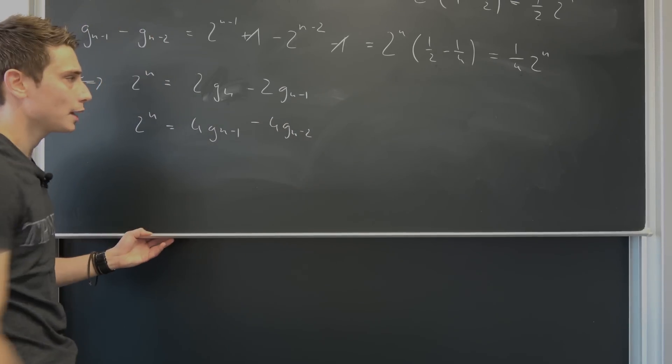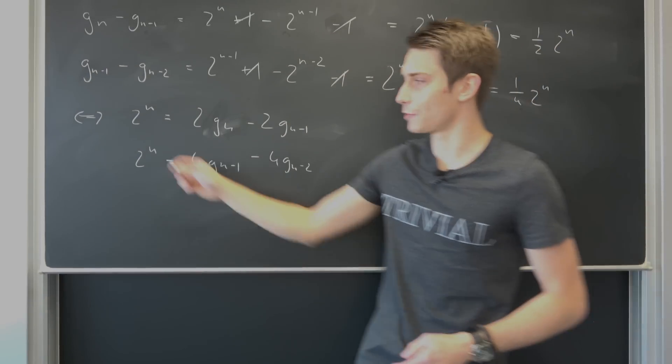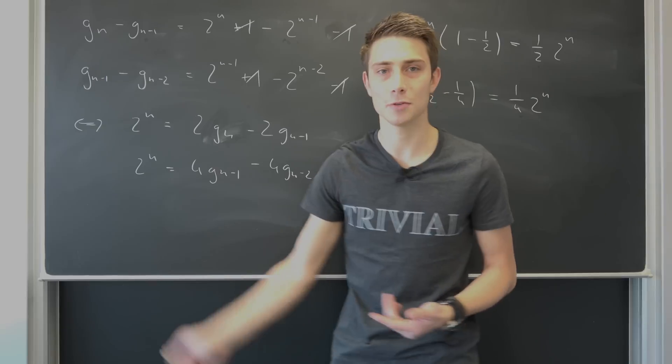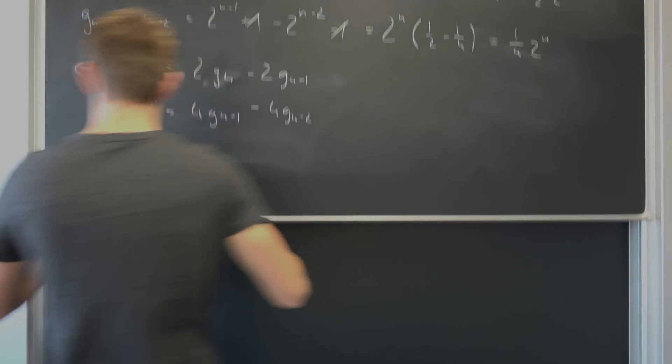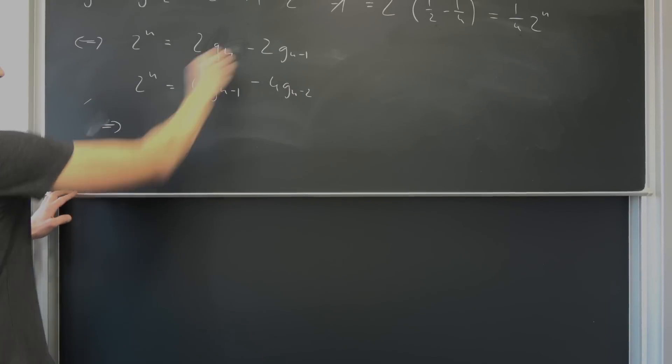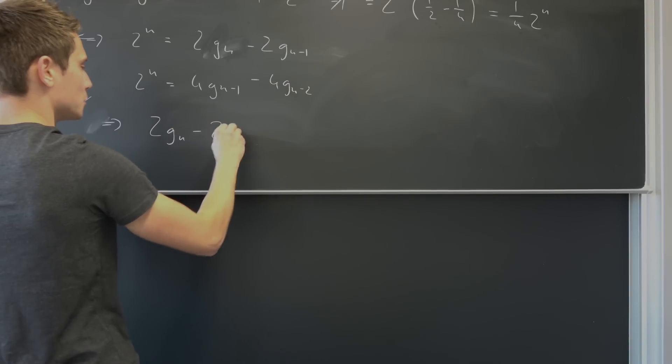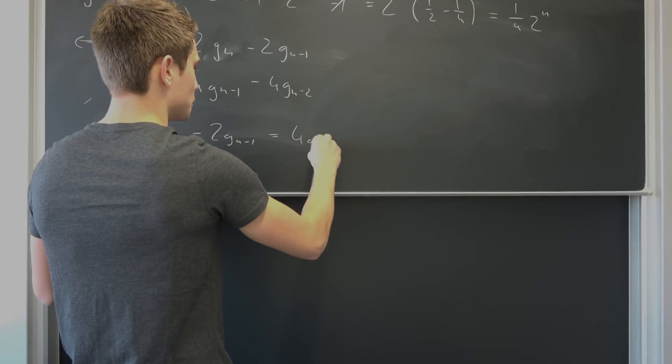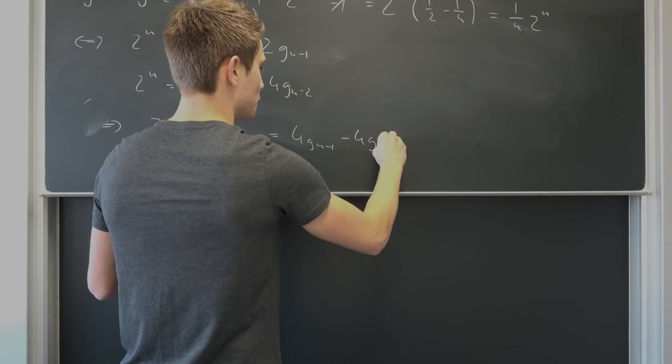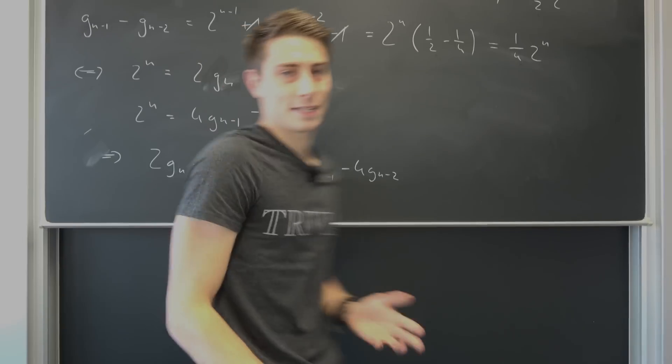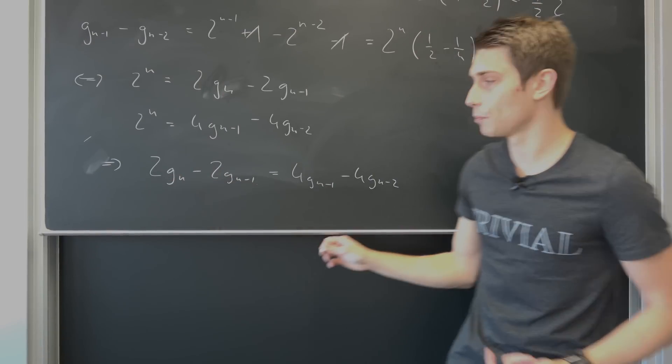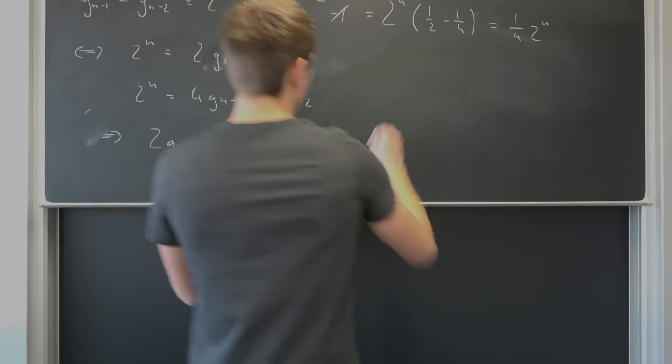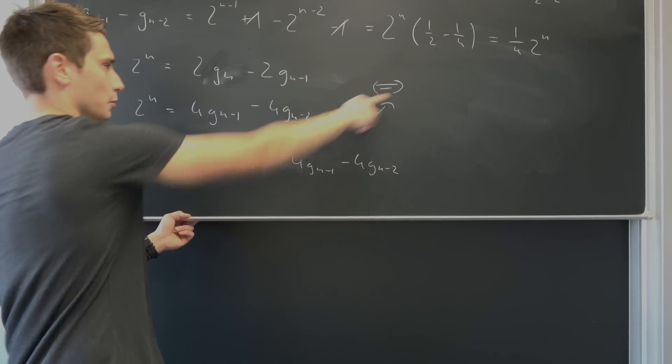And you see, the really cool thing is that we have a system of equations where we have one part that is the same, namely 2^n. So why not set those two equations equal? That means we are going to get 2 g_n minus 2 g_{n-1} being equal to 4 g_{n-1} minus 4 g_{n-2}. And yeah, now we can just divide by 2 on both sides and we can add this g_{n-1} on both sides.